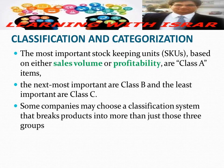The first step is the classification of inventory. The most important stock keeping units, or SKUs, based on either sales volume or profitability, are Class A items. The next most important are Class B, and the least important are Class C. Some companies may choose a classification system that breaks products into more than just those three groups.